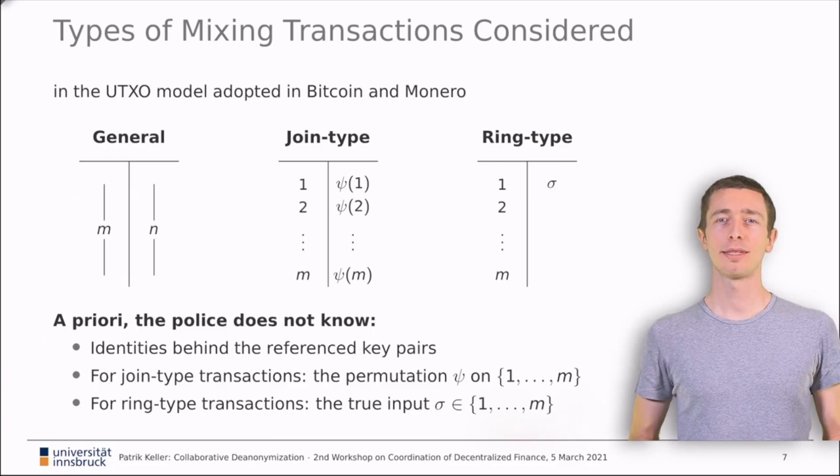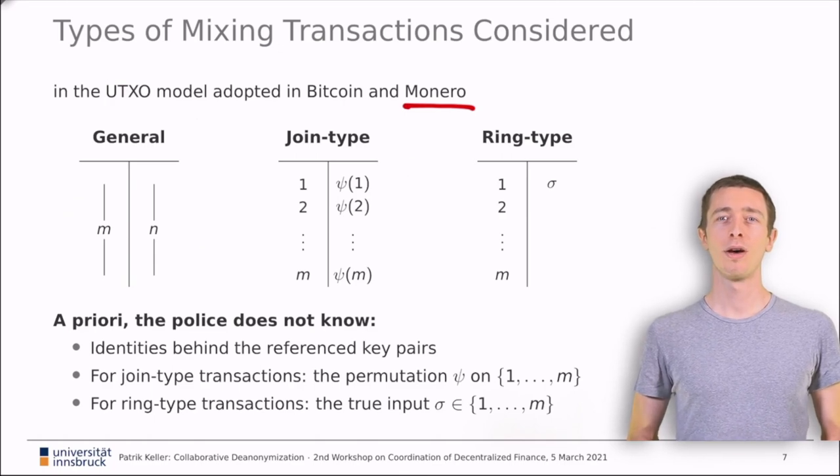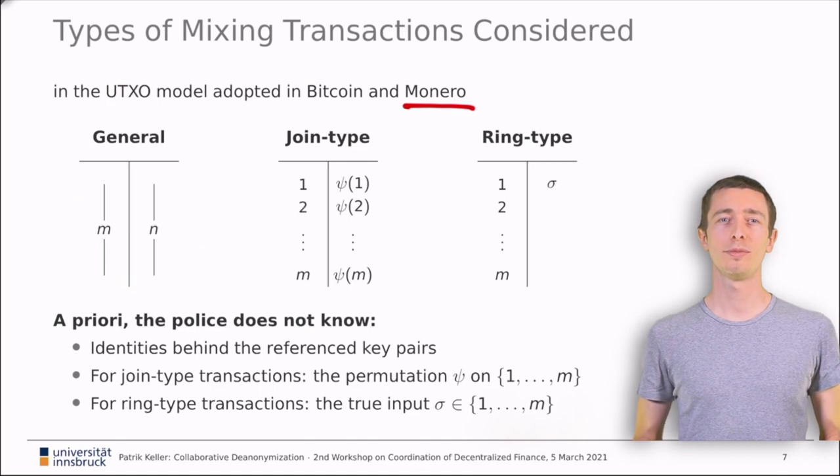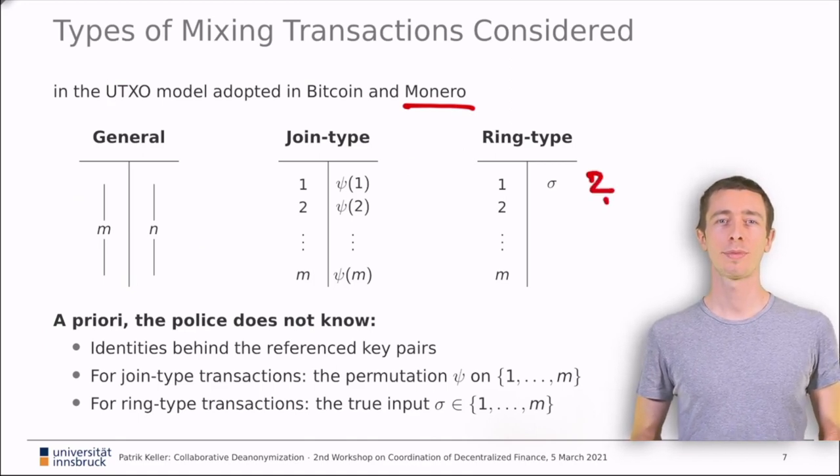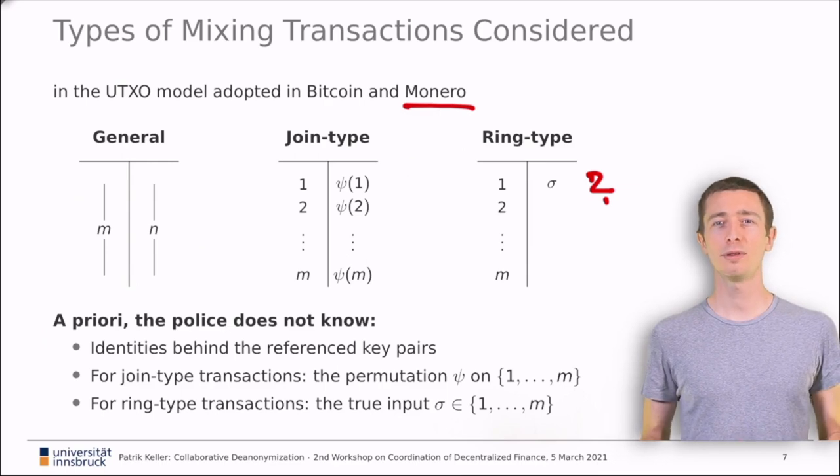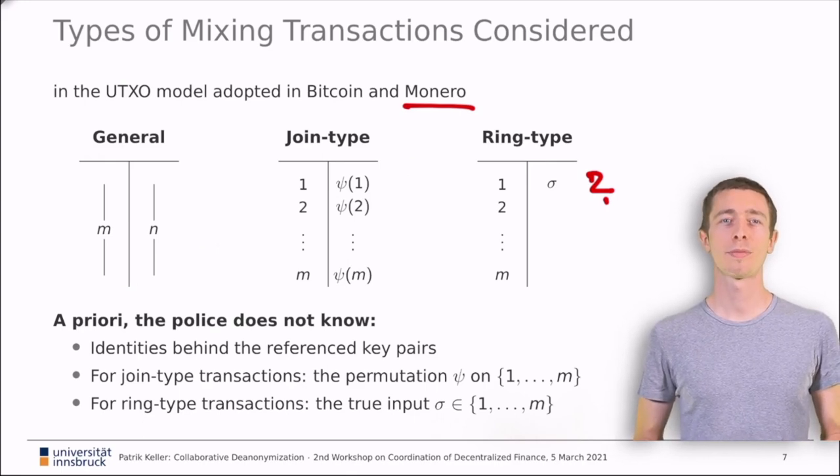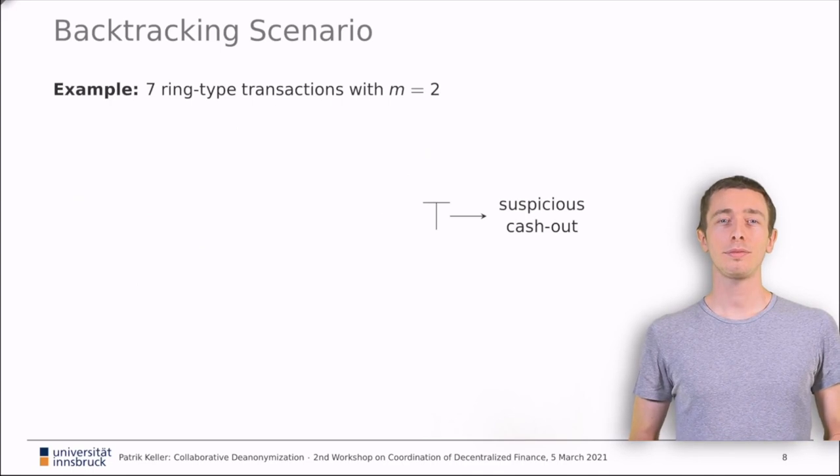The other type of mixing transaction is called ring type transaction and is applied in Monero. Here, there are still M inputs but only a single output. All of the inputs have the same value or encrypted value such that an outside observer cannot infer which of the inputs is the true input sigma. An important difference to joint type transactions is that users can form ring type transactions without the collaboration of other parties. Essentially, you can just reference other people's outputs as your inputs and thereby increase your anonymity without their collaboration.